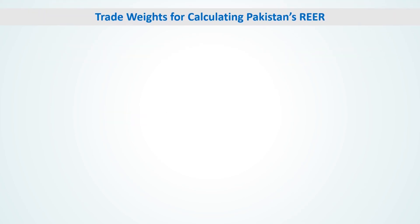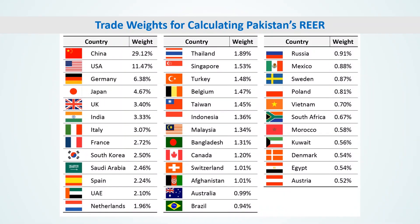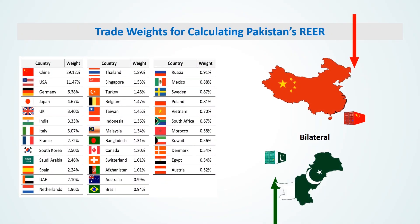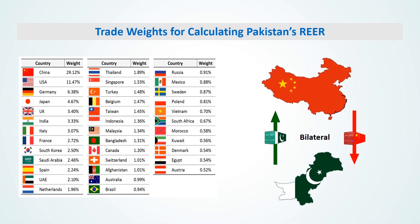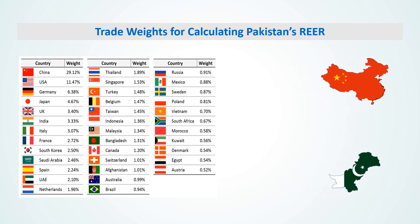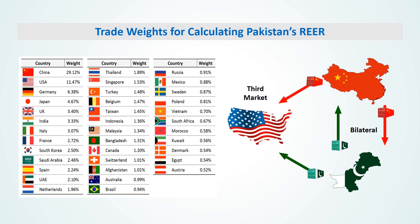Currently, the State Bank is using weights of 37 major trading partners and competitors of Pakistan for REAR calculation. These weights represent not only bilateral trade volumes, but also competition in the third market. For example, the weight for China, which is 29.12%, not only reflects the trade volume between Pakistan and China, but also the competition among Pakistani and Chinese firms in a third market like the USA.